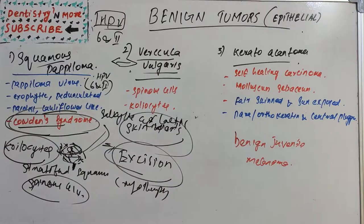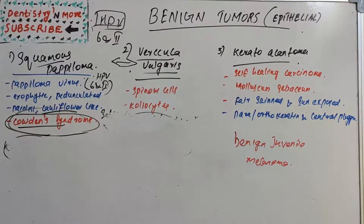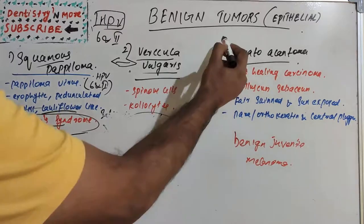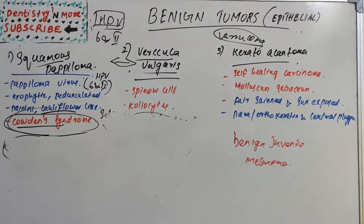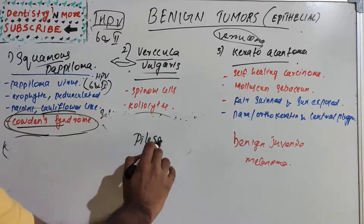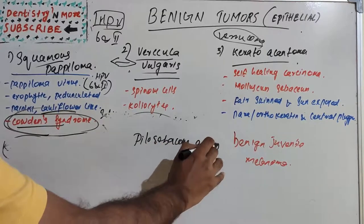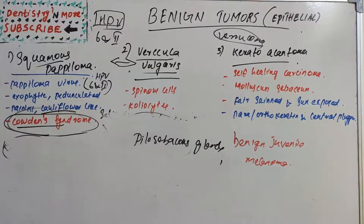Moving on to keratoacanthoma, which is also known as self-healing carcinoma, molluscum sebaceum, or verrucoma. It is a relatively common low-grade malignancy originating in the pilosebaceous glands, and is considered a variant of invasive squamous cell carcinoma. Common etiological factors include sunlight, chemical carcinogens, trauma, HPV virus, genetic factors, and immunocompromised status.